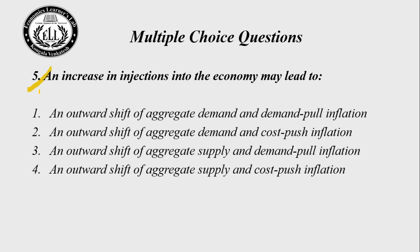Let us solve the last question: An increase in the injection into the economy may lead to — Choice 1: an outward shift of aggregate demand and demand-pull inflation; Choice 2: an outward shift of aggregate demand and cost-push inflation; Choice 3: an outward shift of aggregate supply and demand-pull inflation; Choice 4: an outward shift of aggregate supply and cost-push inflation. When injections increase, aggregate demand increases — that will be demand-pull inflation. So the right answer is choice number one.